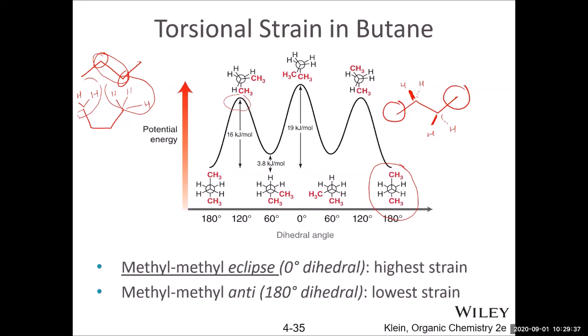The fully eclipsed conformation has a dihedral angle of 0°, meaning the groups exactly overlap — that is maximum torsional strain. The anti conformation is the most stable, which is why when drawing line structures we usually draw the zigzag, because the zigzag gives the least torsional strain and least repulsion between substituents.